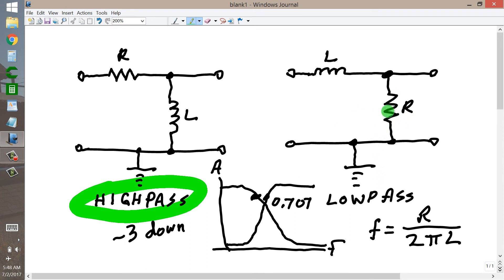In the case of a low pass filter, the exact opposite takes place. The inductor chokes off more and more of the signal as the frequency goes up.